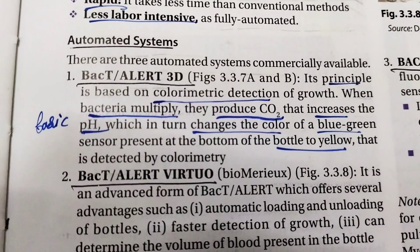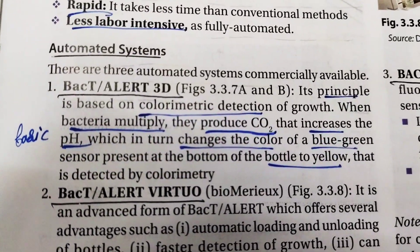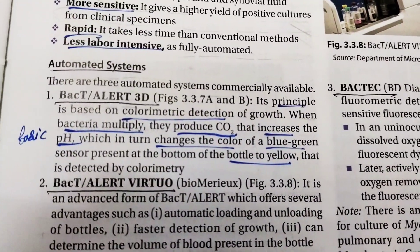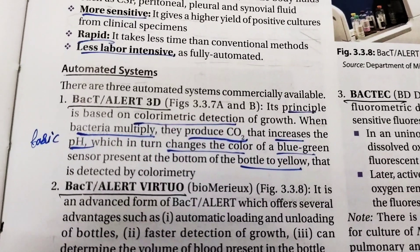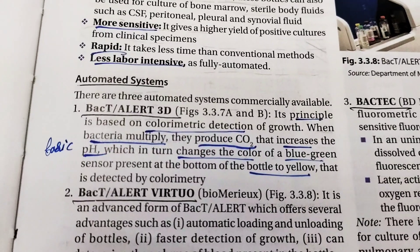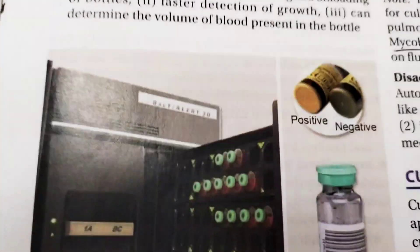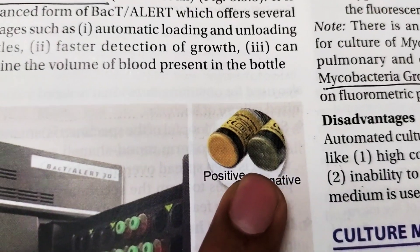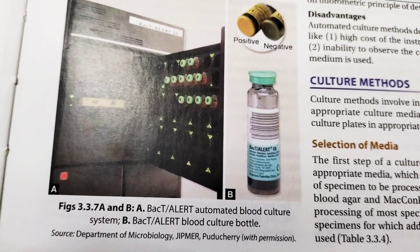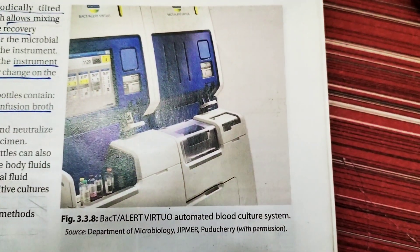We also have automated systems: BacT/Alert 3D, BacT/Alert Virtuo, and BacTec. The most important is BacT/Alert 3D, which is a fully automated machine. Its principle is based on colorimetric detection — the amount of color change is directly proportional to the concentration of a substance. When bacteria multiply they produce carbon dioxide, which increases the pH (making it more basic), which changes the color of a blue-green sensor on the bottom of the bottle to yellow. Yellow color indicates a positive result. BacT/Alert Virtuo is an automated blood culture system.